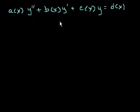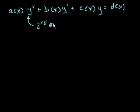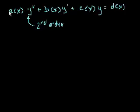To review our terminology: why is this second order? Because the highest derivative here is the second derivative. And what makes it linear? All of the coefficients — and I want to be careful, because traditionally coefficients are constants, but here we have functions of x as coefficients — so a of x, b of x, c of x, and d of x all have to be functions only of x.